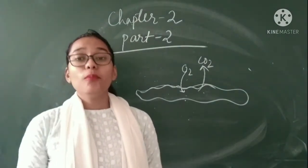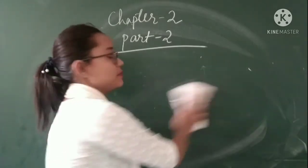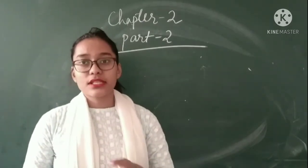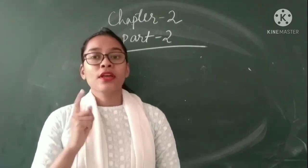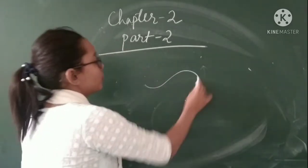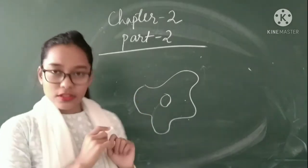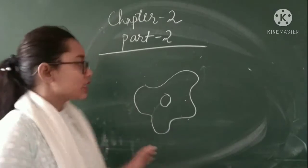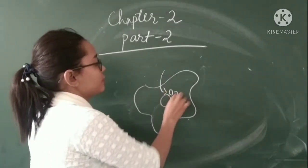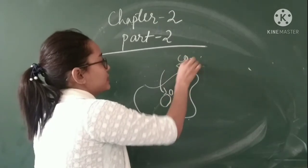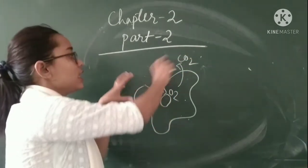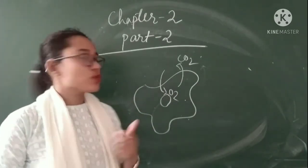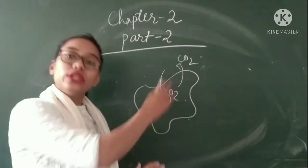Now, breathing through body surfaces. Microscopic organisms - microscopic means they are very small in size, very tiny organisms - are made up of only one cell, a single cell. For example, Amoeba and Paramecium. They are made up of only one cell, so they don't have any respiratory organ for breathing. So what they do? They directly take up oxygen from the environment and release carbon dioxide. They breathe through their body surface - their whole body is made up of a single cell, so they breathe through it and breathe out through the same body.